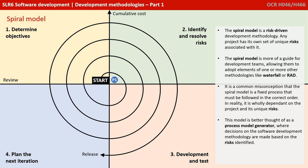The spiral model is split into four main quadrants: determine the objectives, identify and resolve risks, develop and test, and plan for the next iteration. Starting in the top left, determining some objectives may lead to a very early initial prototype. From this we can build an initial concept of requirements, how the system will operate, and a very initial requirements plan. At this first stage we commit to an appropriate methodology for the next iteration.